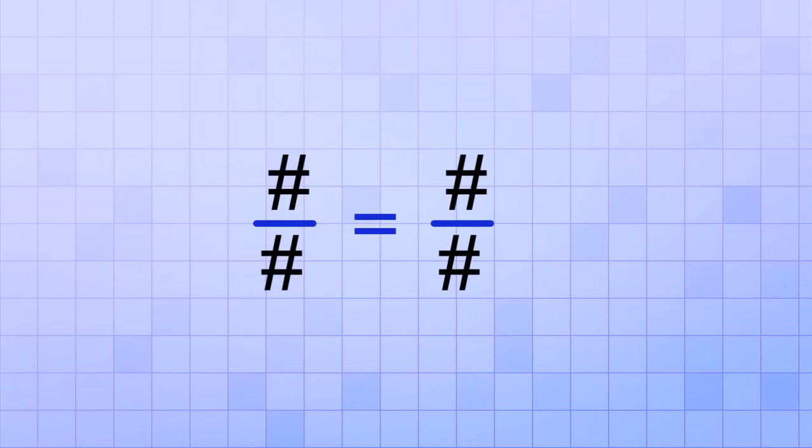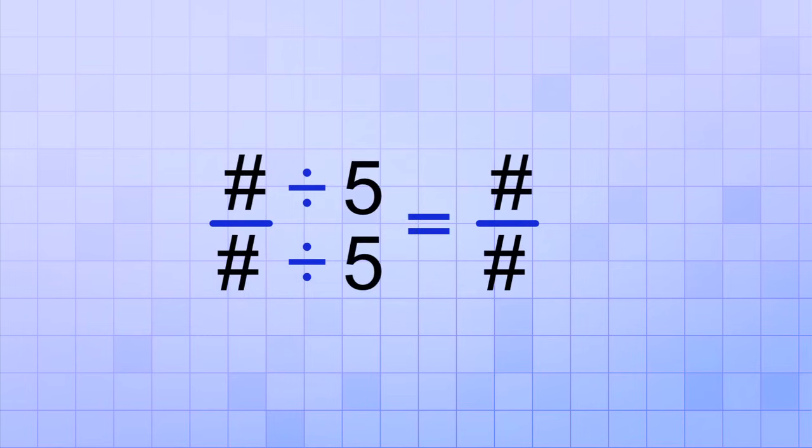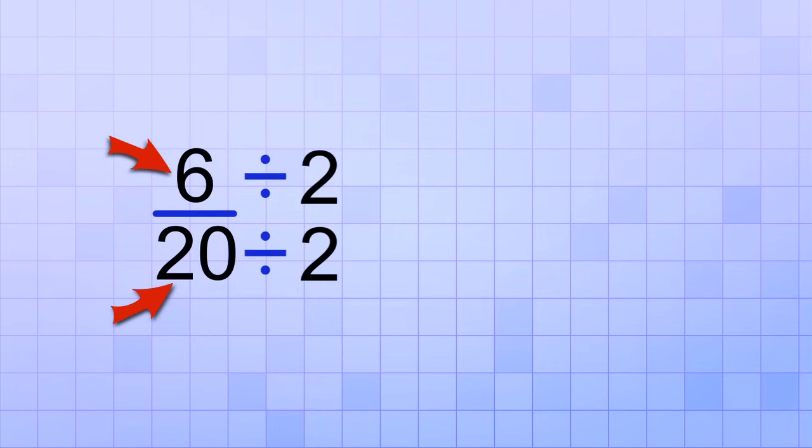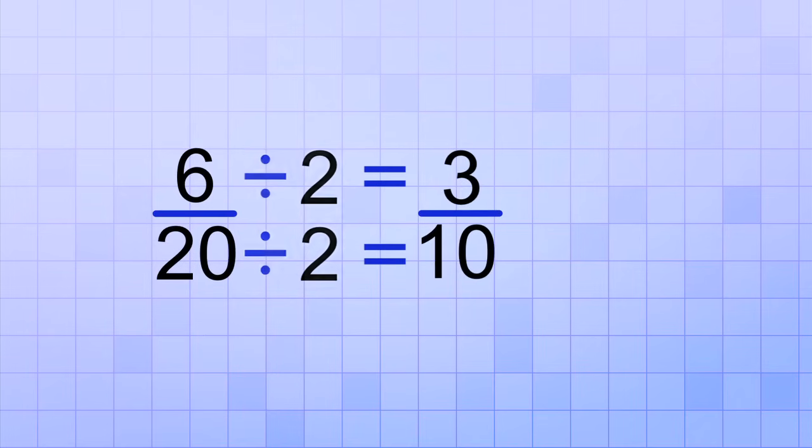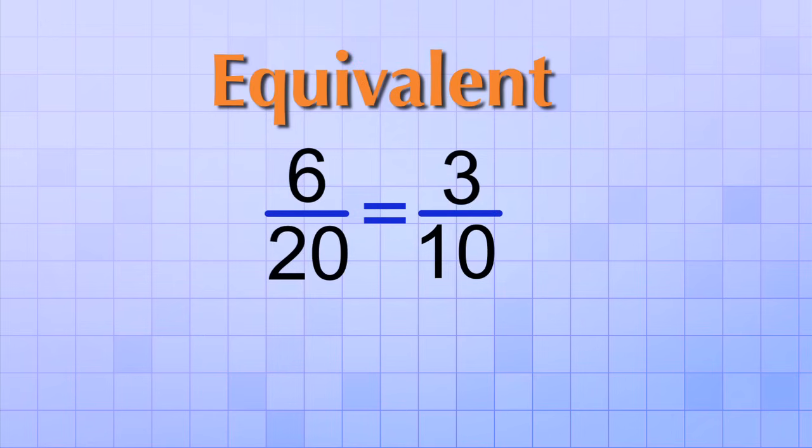And you can also make an equivalent fraction by dividing both the top and bottom numbers by the same number. This is really what we're doing when we simplify a fraction. For example, if you have the fraction 6 over 20, you could divide the top and bottom numbers by 2 since they're both even numbers. On the top, you'd have 6 divided by 2, which is 3, and on the bottom, you'd have 20 divided by 2, which is 10. So 6 over 20 and 3 over 10 are equivalent fractions.